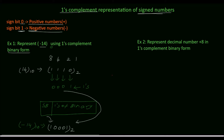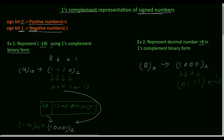Next we'll solve example 2: represent the decimal number plus 8 in one's complement binary form. First we'll write the binary equivalent of 8, which is 1 0 0 0 base 2. Next, find the one's complement of this binary number by inverting it: 0 1 1 1 is the one's complement.